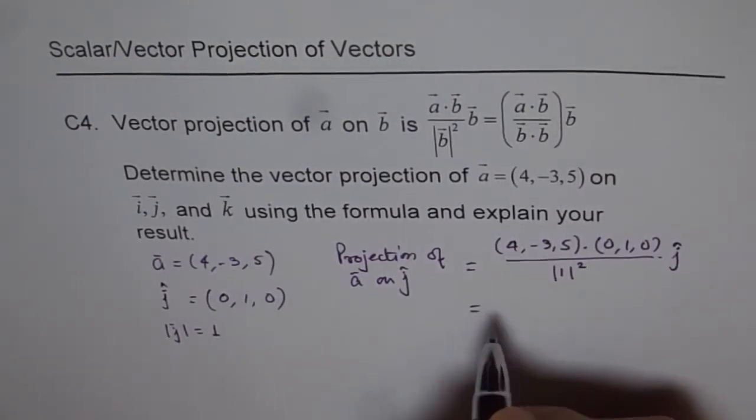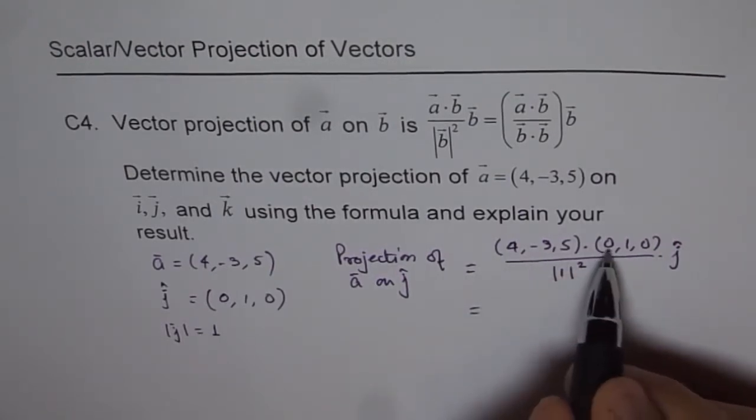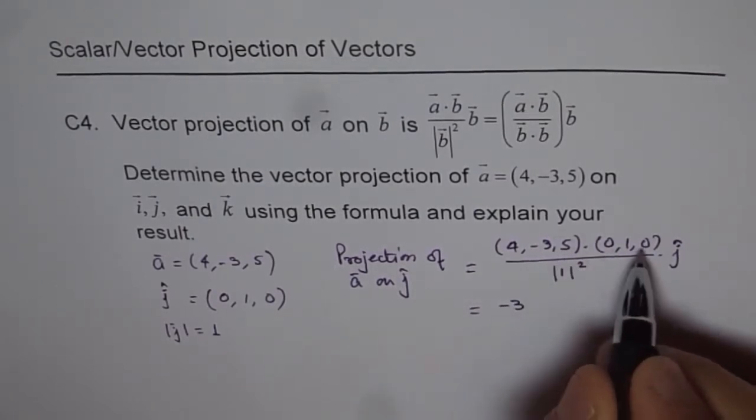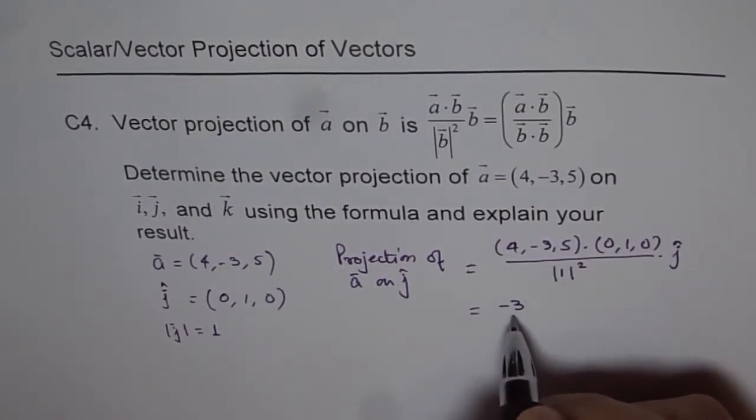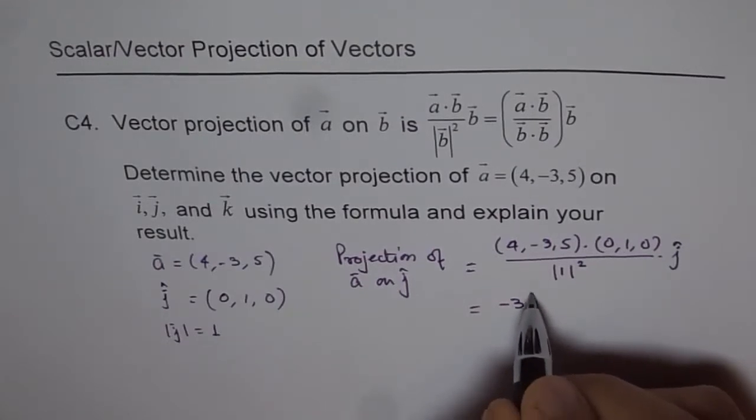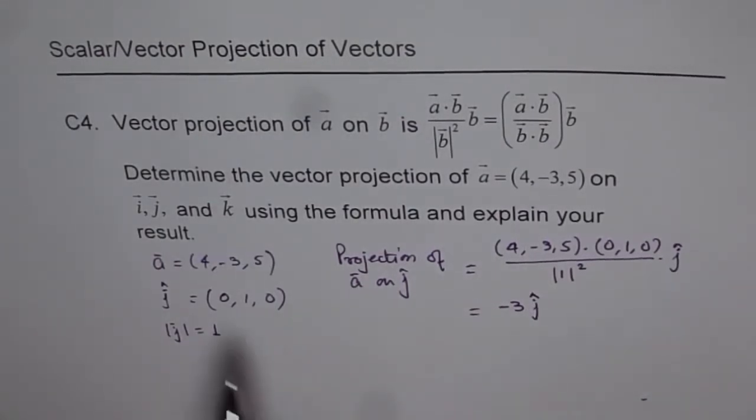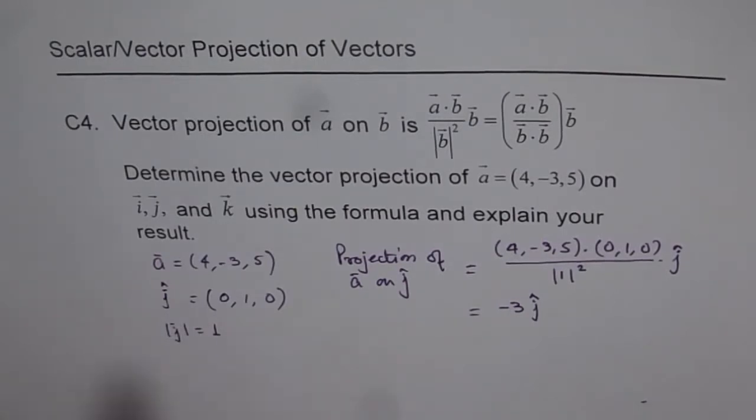Now, if you do this, what do you get? 4 times 0 is 0, minus 3 times 1 is -3, so you get -3. And 5 times 0 is 0, divided by 1 is -3 itself, in the direction of j. So this is the vector projection of the given vector on j.